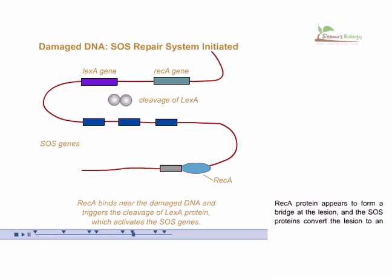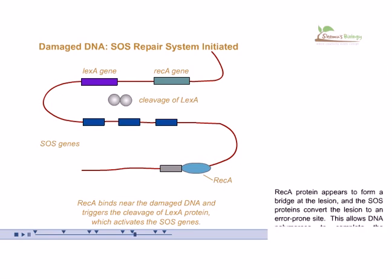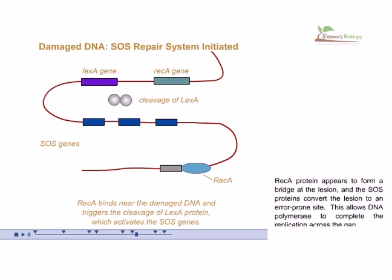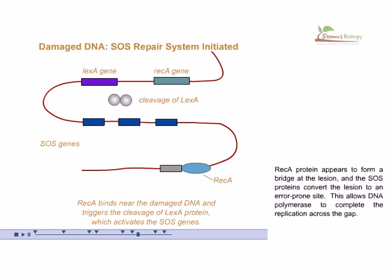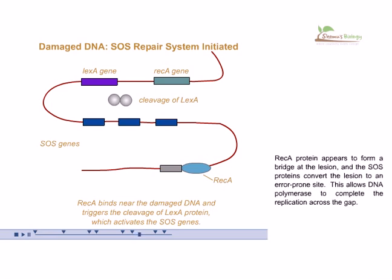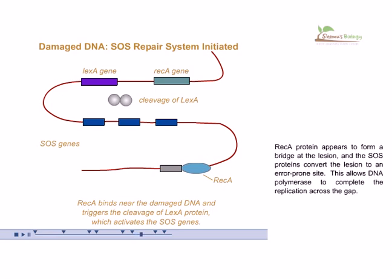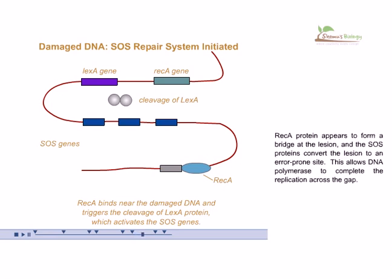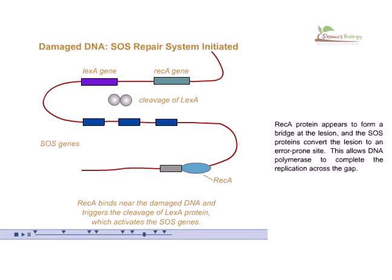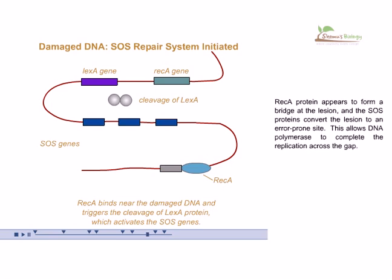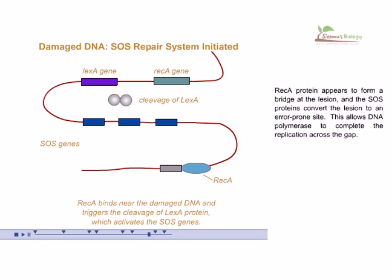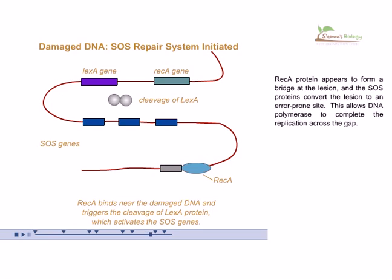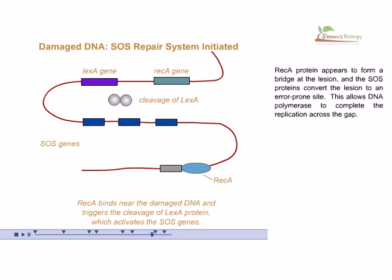REC A protein appears to form a bridge at the lesion, and the SOS proteins convert the lesion to an error-prone site. This allows DNA polymerase to complete replication across the gap.